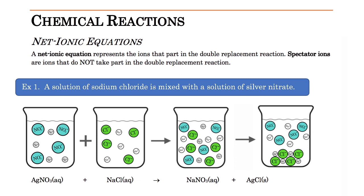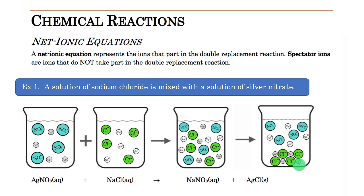The term double replacement is very misleading from the particle perspective, but from the equation writing perspective it's okay, because when you look at the equation it appears that the ions are replacing each other and creating a double replacement scenario. But it's very misleading from the particle level. If we're looking at the actual particles that are interacting, there really isn't a double swap going on — it's really just two ions that come in contact with each other to make an insoluble solid substance. So what net ionic equations are is a way to try to account for that, to try to fix that situation.